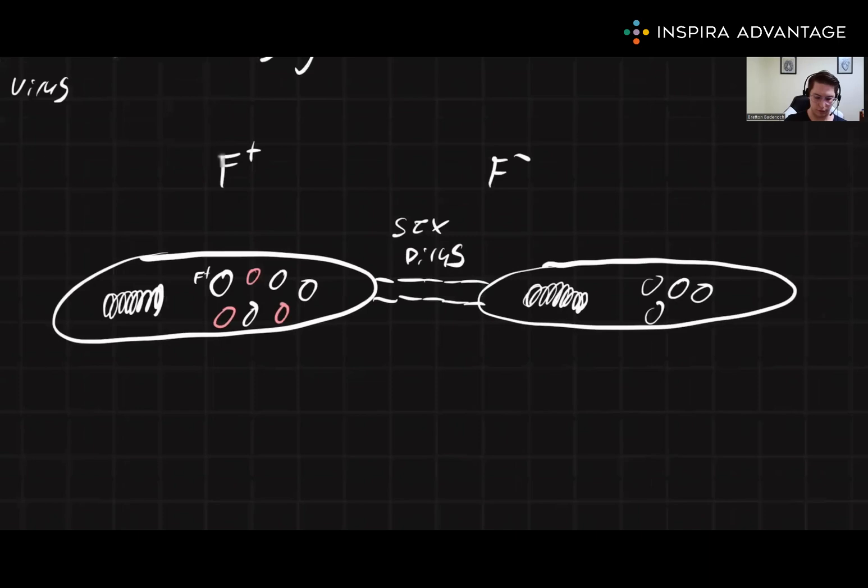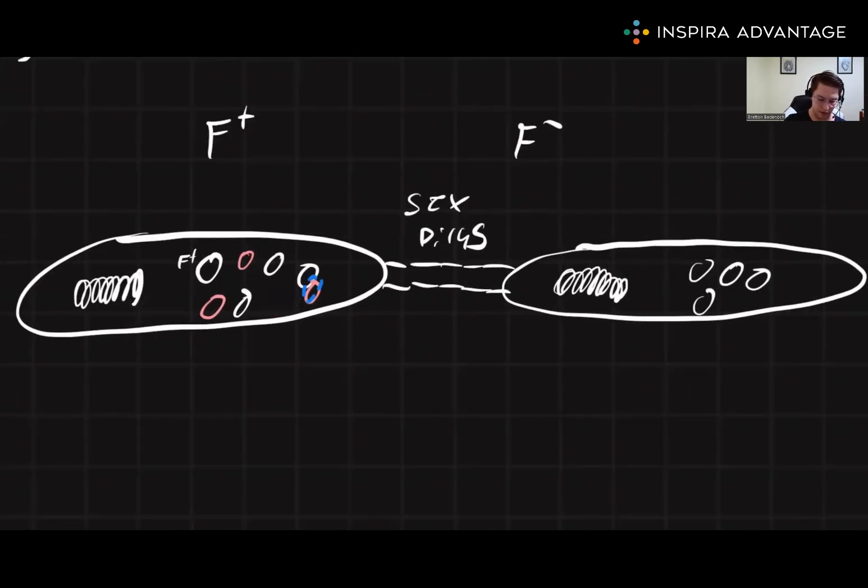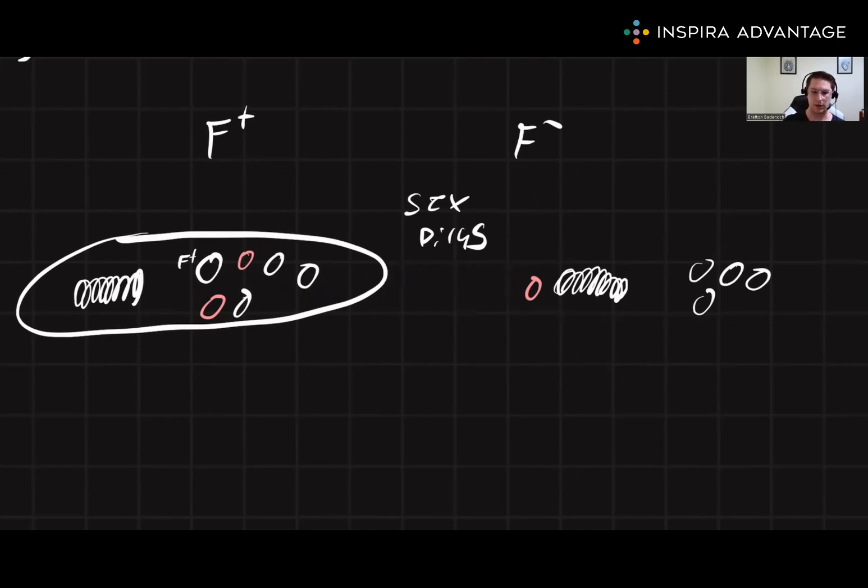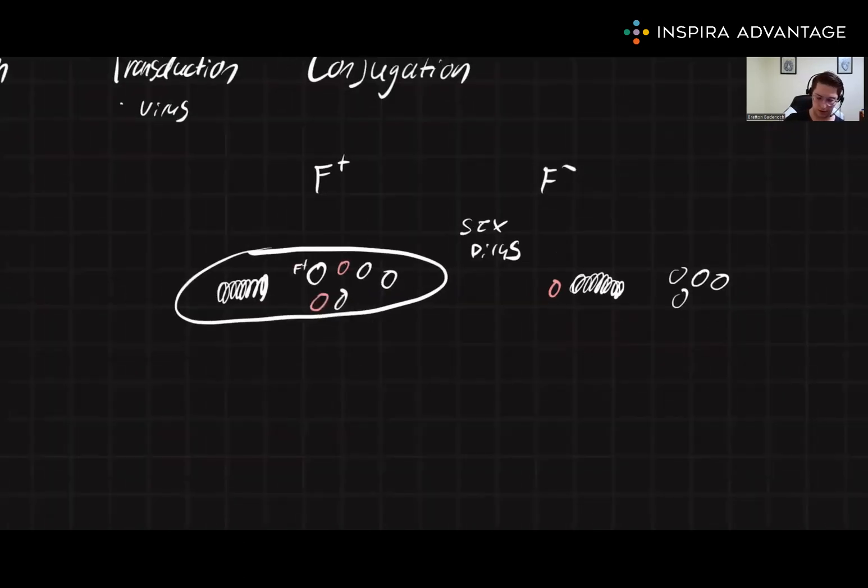Plasmid DNA will move through the sex pilus from the F factor bacteria into the F minus bacteria. After the F plus bacterium donates some of its plasmids, the sex pilus will then break down and the two bacteria will move on their merry way.